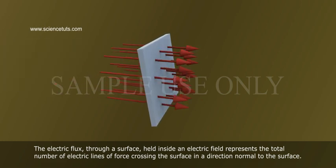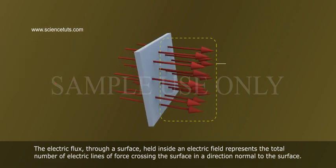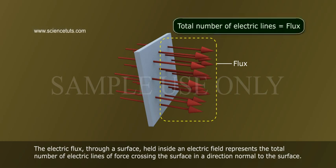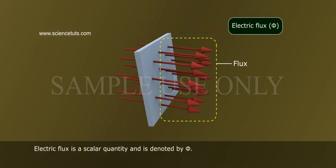Electric flux through a surface held inside an electric field represents the total number of electric lines of force crossing the surface in a direction normal to the surface. Electric flux is a scalar quantity and is denoted by phi.